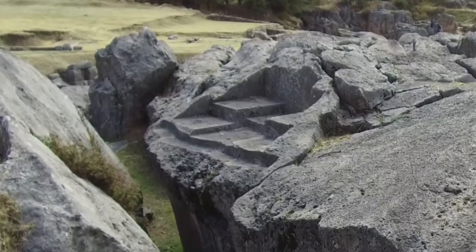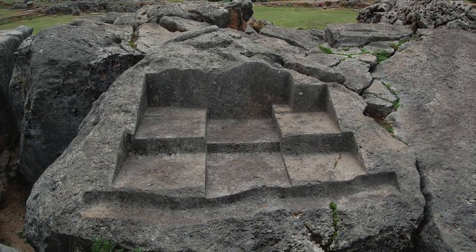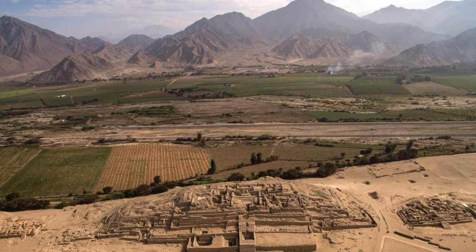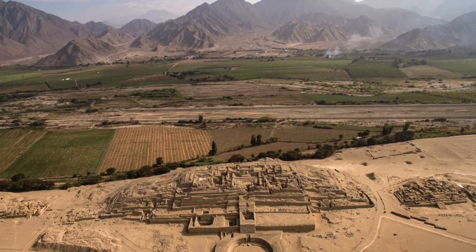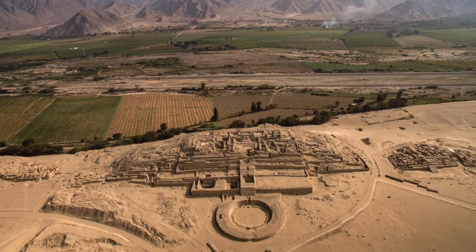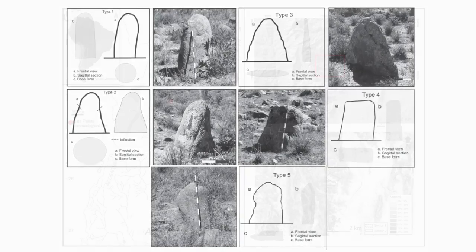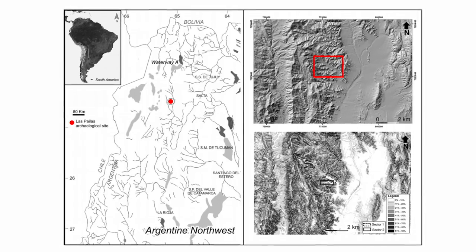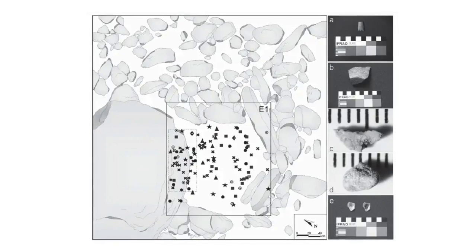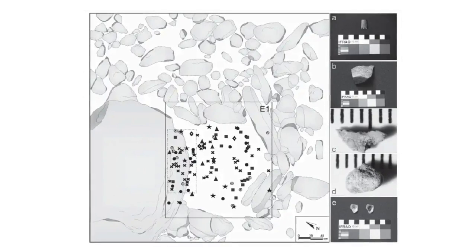Some people call the sculpted boulders memory scapes. They have a long history in the Andes and are even seen in the ancient city of Caral, a site dating back to before 2500 BC. They are also often found inside an agricultural setting, for example at the archaeological site of Las Pelas in Argentina. Through their study, experts believe they were involved in agricultural fertility rituals to ensure the land stayed fertile.